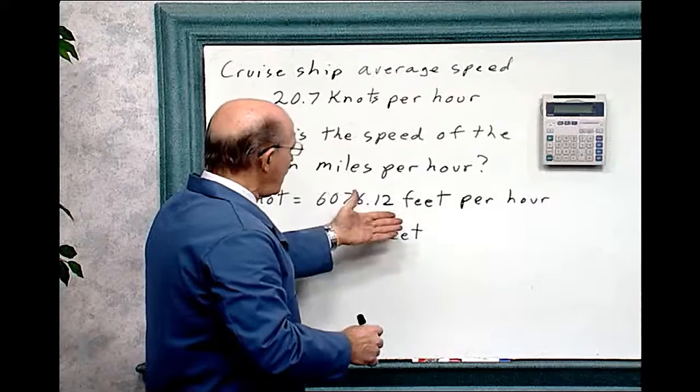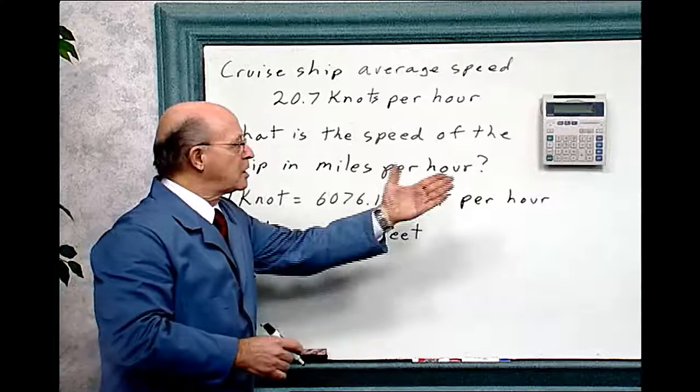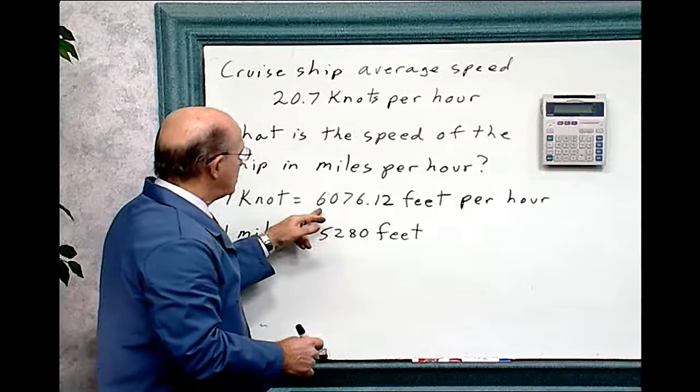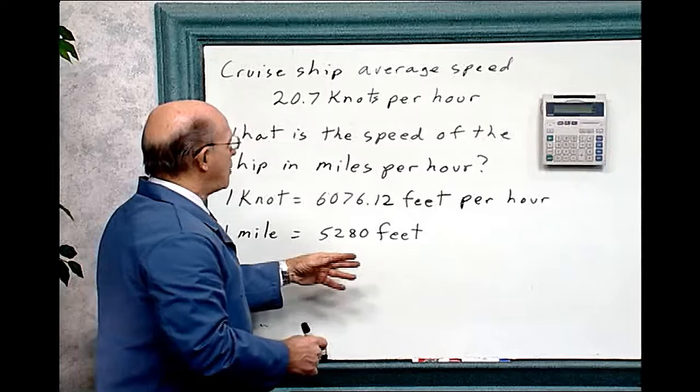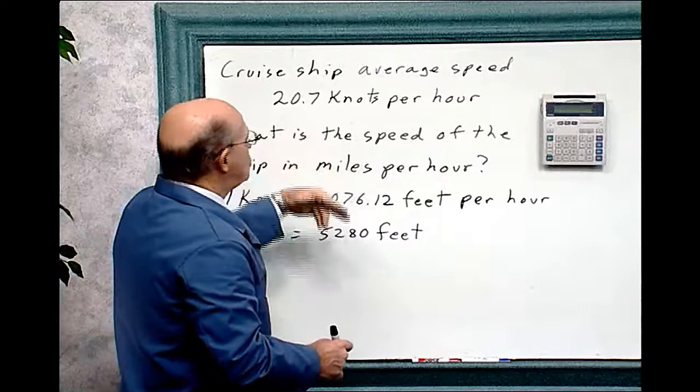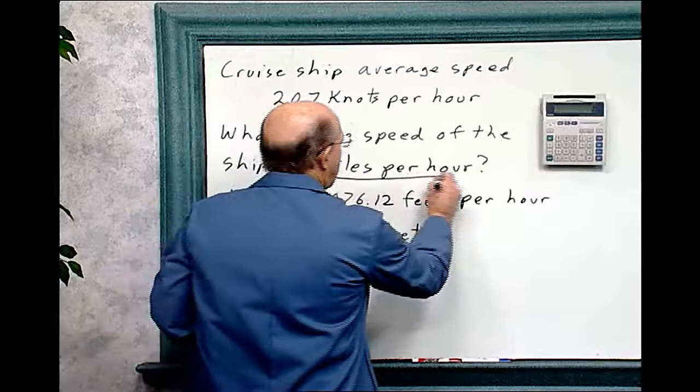I purposely used feet so we have a little more difficult calculation here, and this actually is a more accurate measurement because it's 6,076.12 feet per hour is one knot. And one mile equals 5,280 feet. So what we've got to do then is convert this 20.7 knots per hour into how many miles per hour. That's what we want to find out - this is what we're looking for: miles per hour.